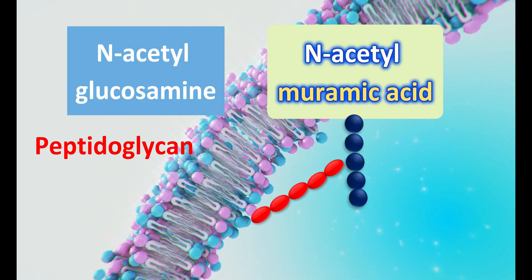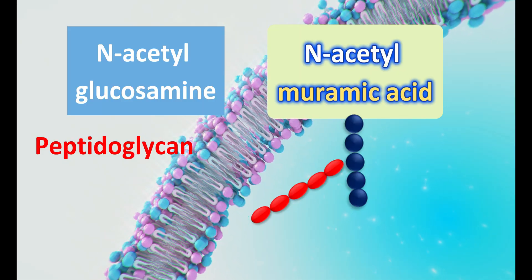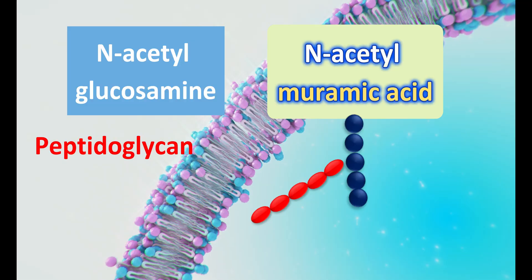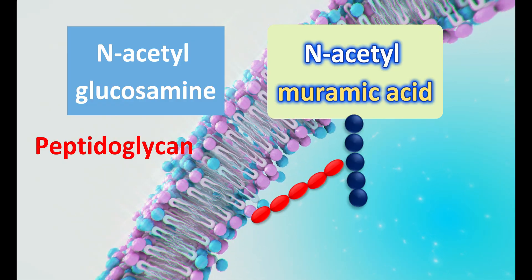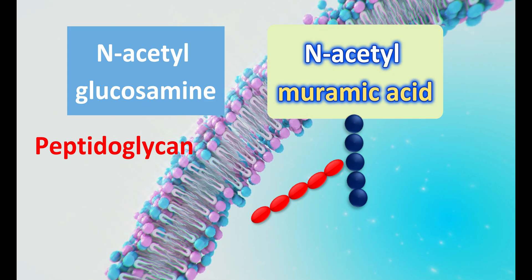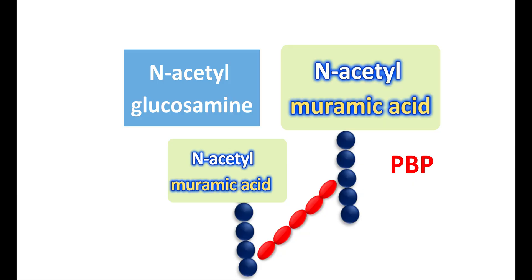The cross-linking step is mediated by a protein called penicillin-binding protein (PBP). Since this protein is blocked by penicillins, it is called penicillin-binding protein. This protein has a role in the final cross-linking step in peptidoglycan synthesis, acting like transpeptidases that produce a cross-link between the two peptide chains. A covalent bond is formed between the amino acids on two adjacent sugar chains, giving strength and rigidity to the bacterial cell wall. Amoxicillin targets this final step of cell wall synthesis.